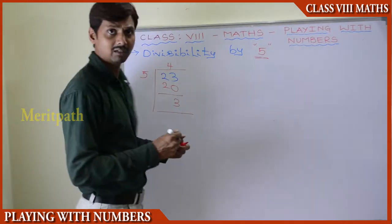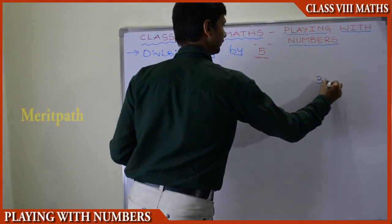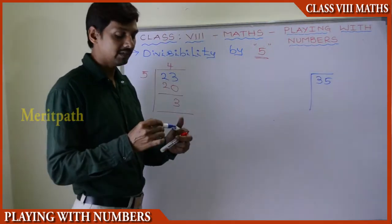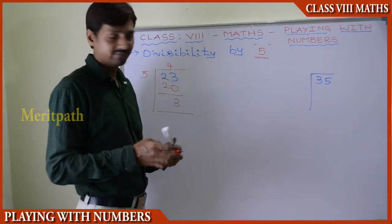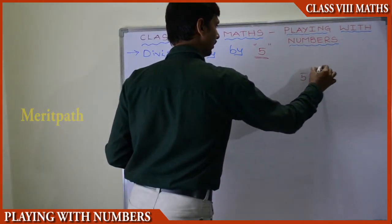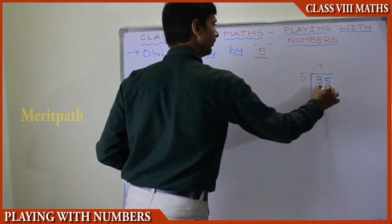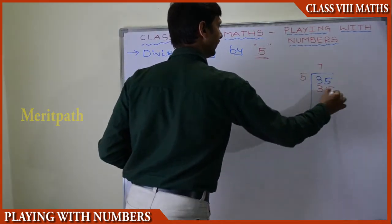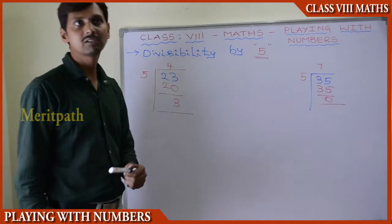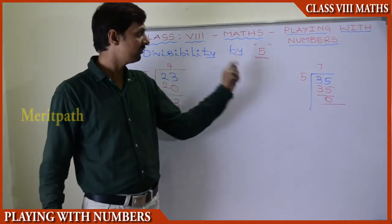Let us take another number: 35. Let us divide by 5. 7 times 5 is 35, and we get 0 as remainder. It is completely divisible. So we say that 35 is divisible by 5.